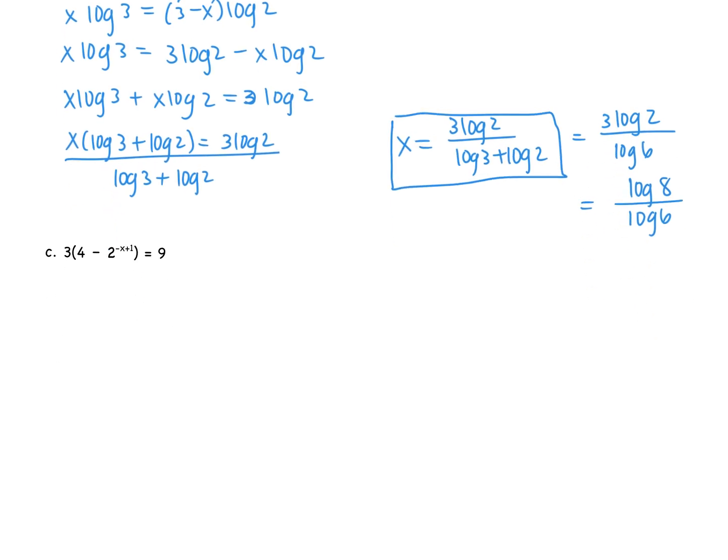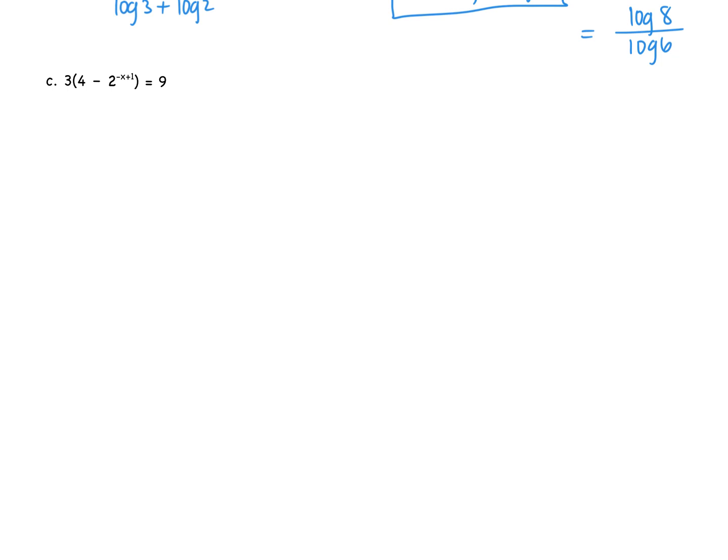Okay. Last one together is C. Again, we're solving for X. We might be tempted to multiply that 3 in, to distribute the 3 to the left side. Let's not make our lives more complicated. What can we do instead? Divide by 3. Yeah. Divide by 3. Don't multiply it in. Divide by 3. This is going to make our lives a lot easier. So then we end up with 4 subtract 2 to the negative X plus 1. And 9 divided by 3 is 3. So I'm going to subtract my 4. So I get negative 2 to the negative X plus 1. And 3 subtract 4 is negative 1. It might be nice for us to get rid of those negatives. So to get rid of the negatives, we divide by a negative. So we get 2 to the power of negative X plus 1 is equal to 1.